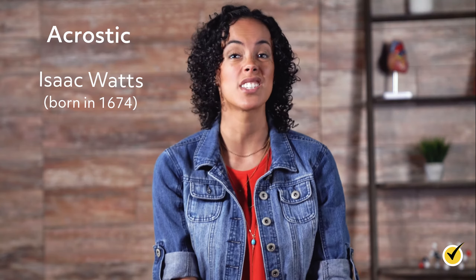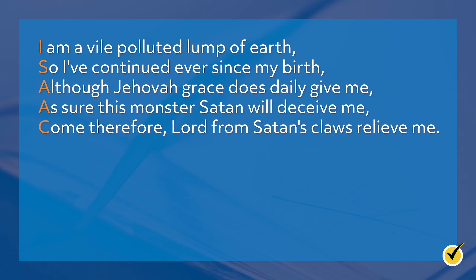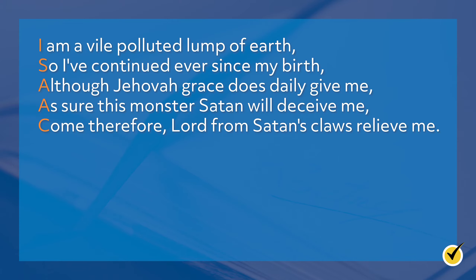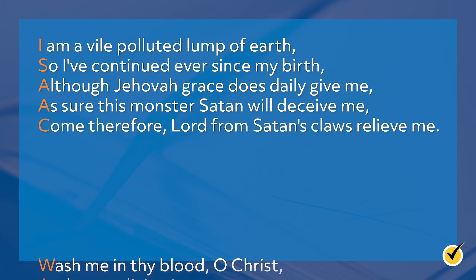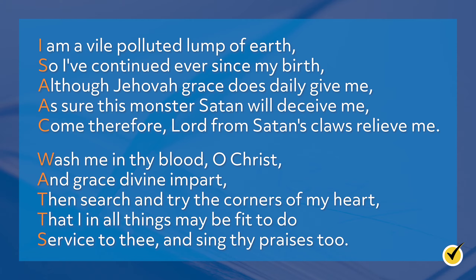Another type of poem is an acrostic, where the first letter of each line spells something. Isaac Watts, who was born in 1674, wrote an acrostic that spelled out his name when he was just seven years old: "I'm a vile, polluted lump of earth, so I've continued ever since my birth. Although Jehovah grace does daily give me, as sure this monster Satan will deceive me. Come therefore, Lord, from Satan's claws relieve me. Wash me in thy blood, O Christ, and grace divine impart. Then search and try the corners of my heart, that I in all things may be fit to do service to thee and sing thy praises too."